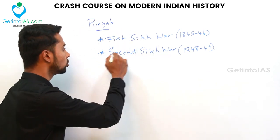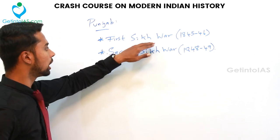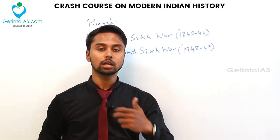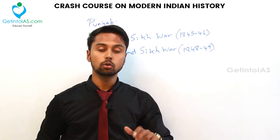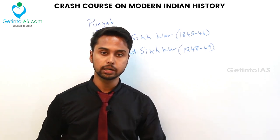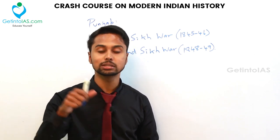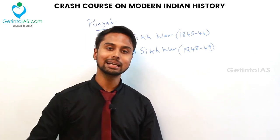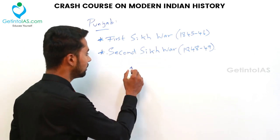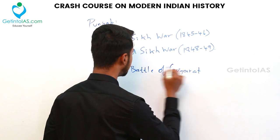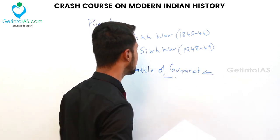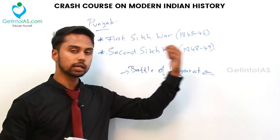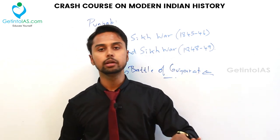The Second Sikh War happened because the British did not treat Rani Jindan well, there was a revolt by an officer called Mulraj, and another officer Sher Singh — sent by the British to suppress that revolt — instead joined it and attacked the British. This led to the Second Sikh War and the famous Battle of Gujarat, by which whole Punjab was annexed by Dalhousie. This was the last autonomous state to fall to the British.